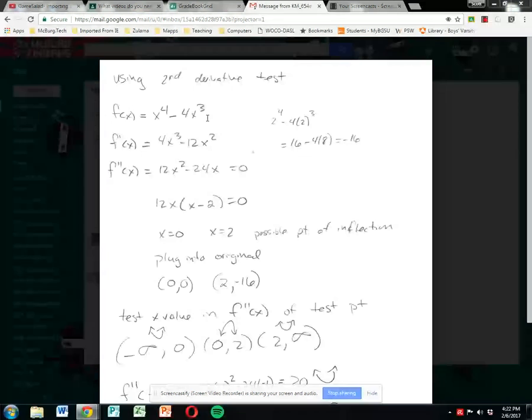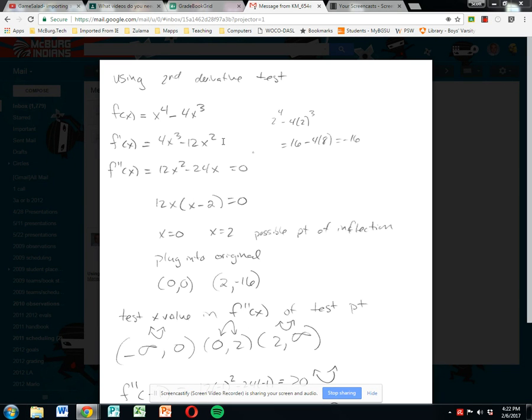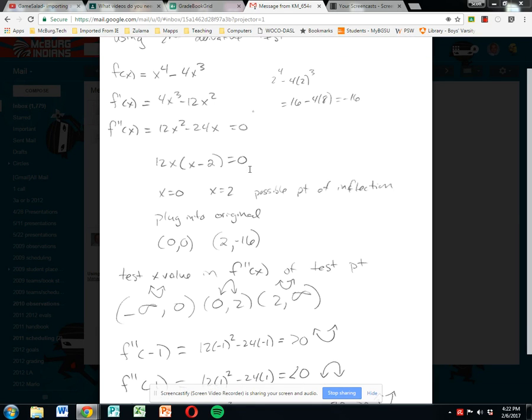x to the 4th minus 4x cubed. One derivative with power rule gives us this. Another derivative with power rule gives us this. We set the second derivative equal to zero. I factor out a 12x leaves me quantity x minus 2 is equal to zero. Shows that x is equal to zero and x equal to two are possible points of inflection.